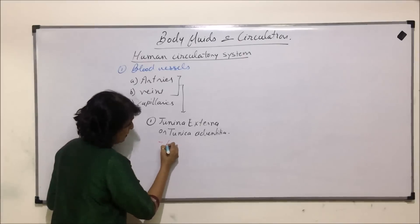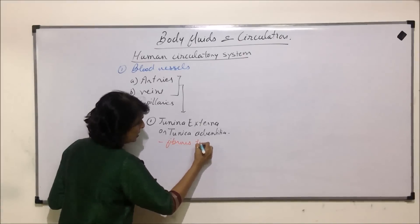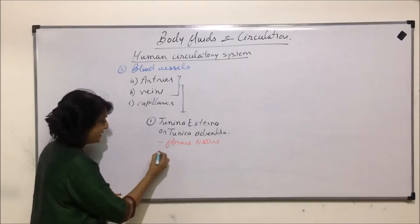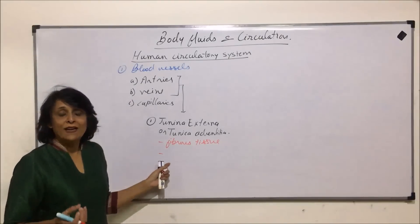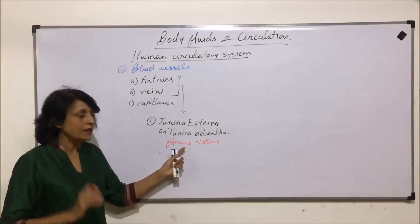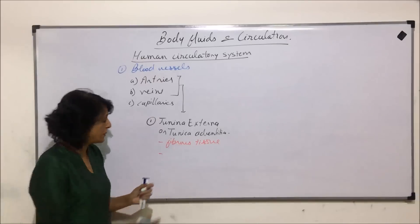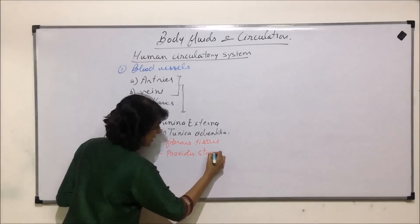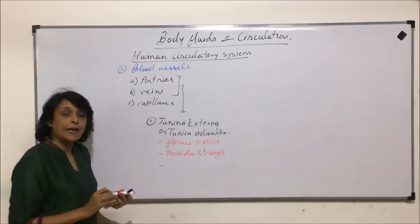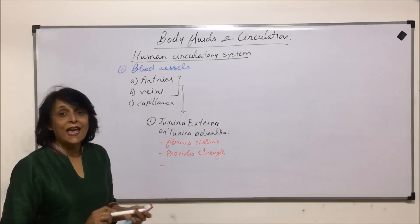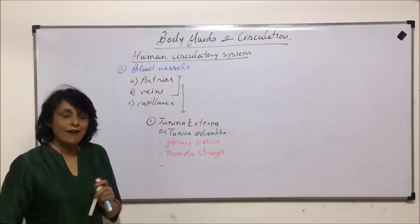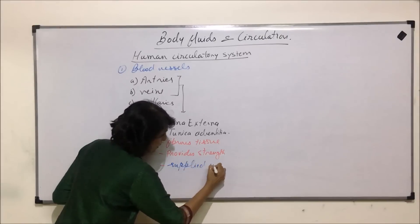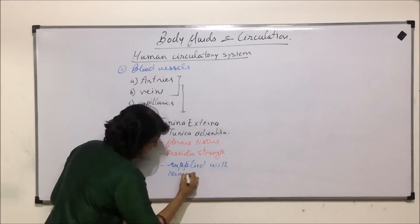Tunica externa is made of fibrous tissue — both collagen and elastin. It provides strength to the blood vessel. This is the layer which is supplied with nerves and also with vasa vasorum.